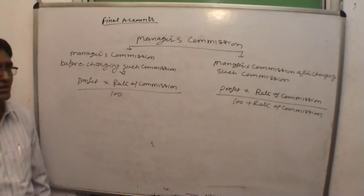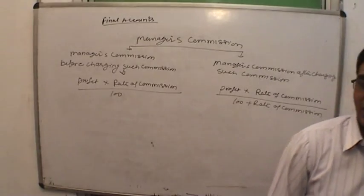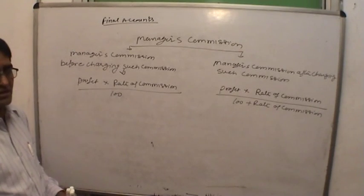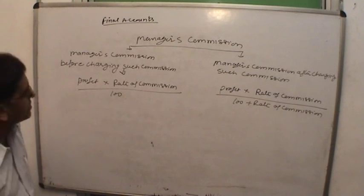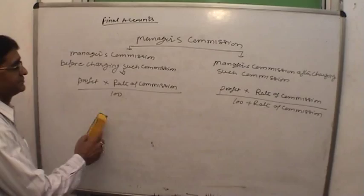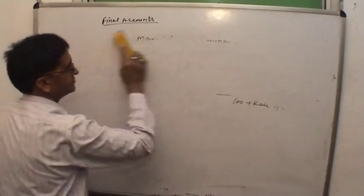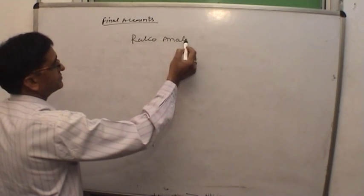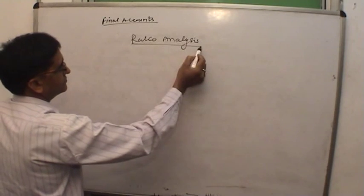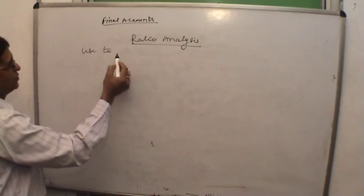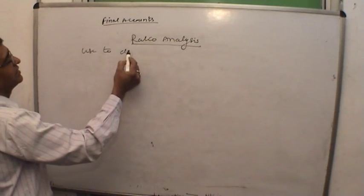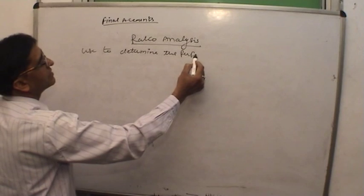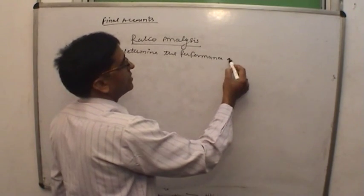This is all about final accounts, and you have to make entries into final accounts by giving the directions in this section. The next topic is ratio analysis. Ratio analysis is used to determine the performance of the organization.